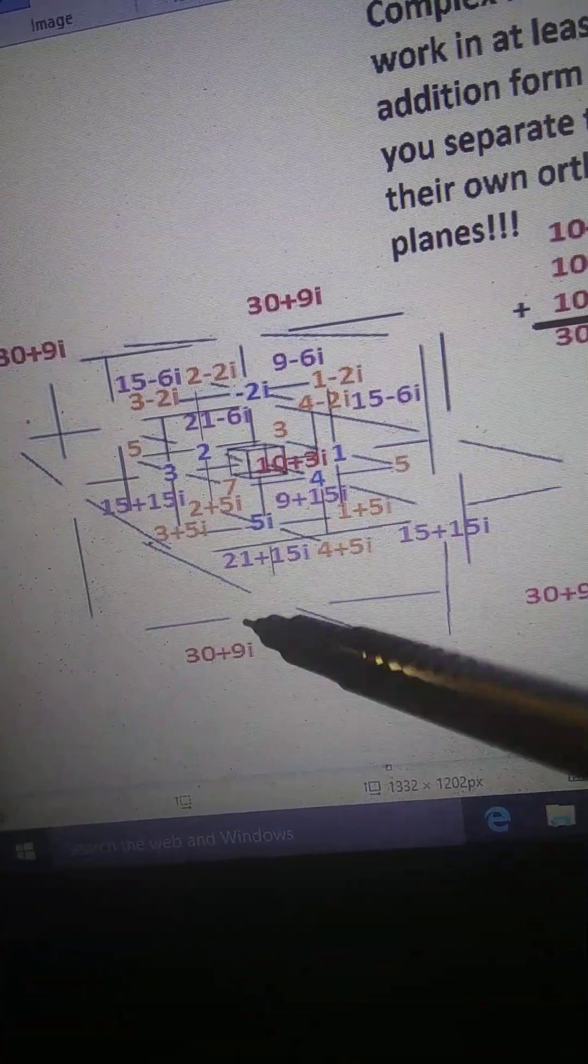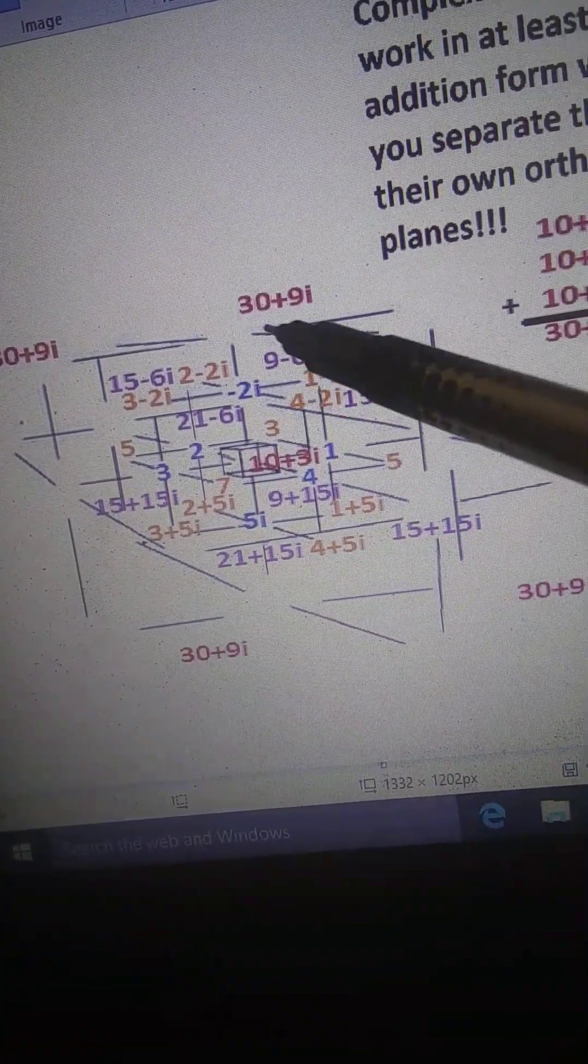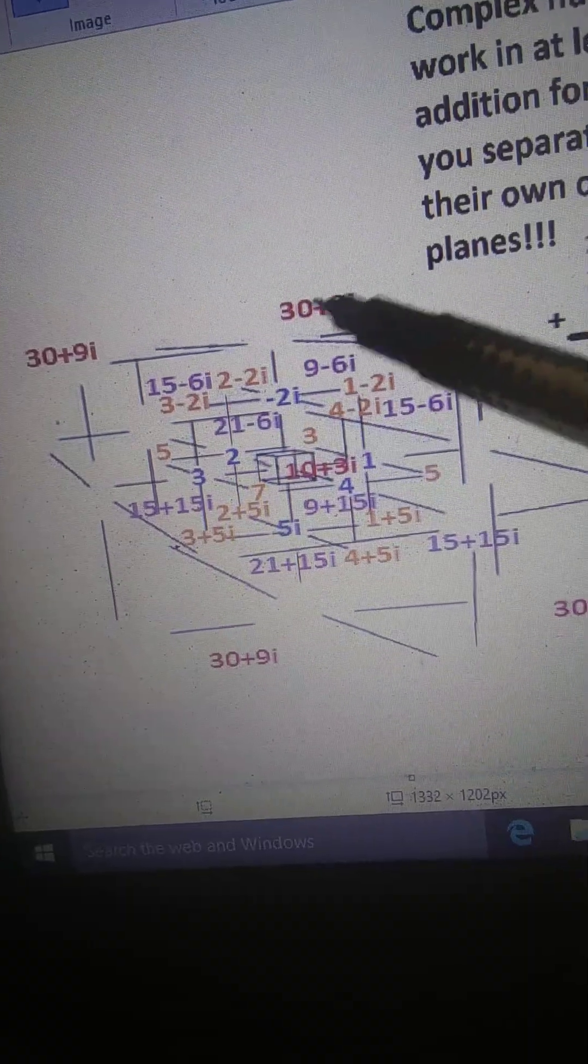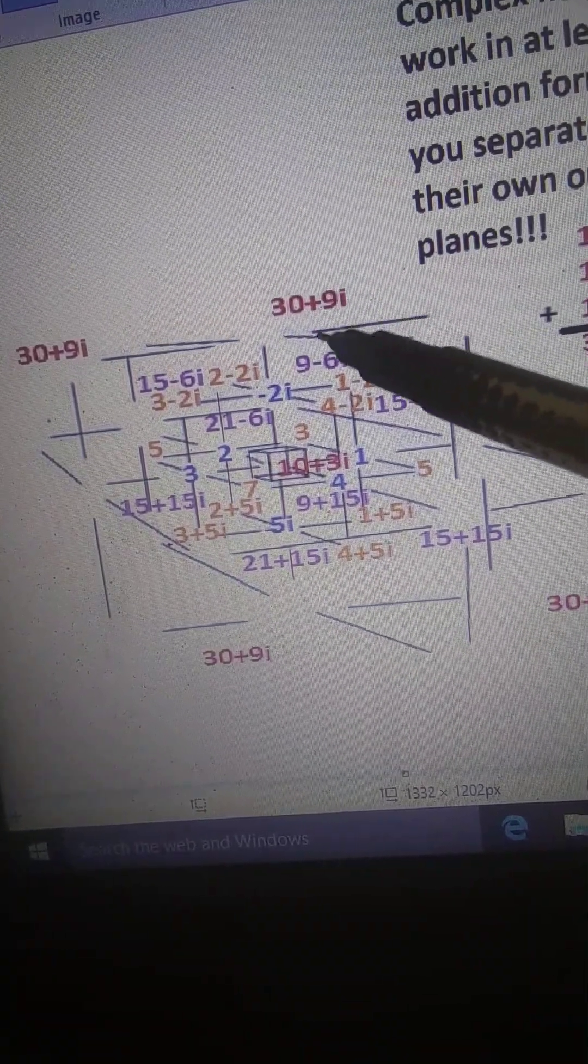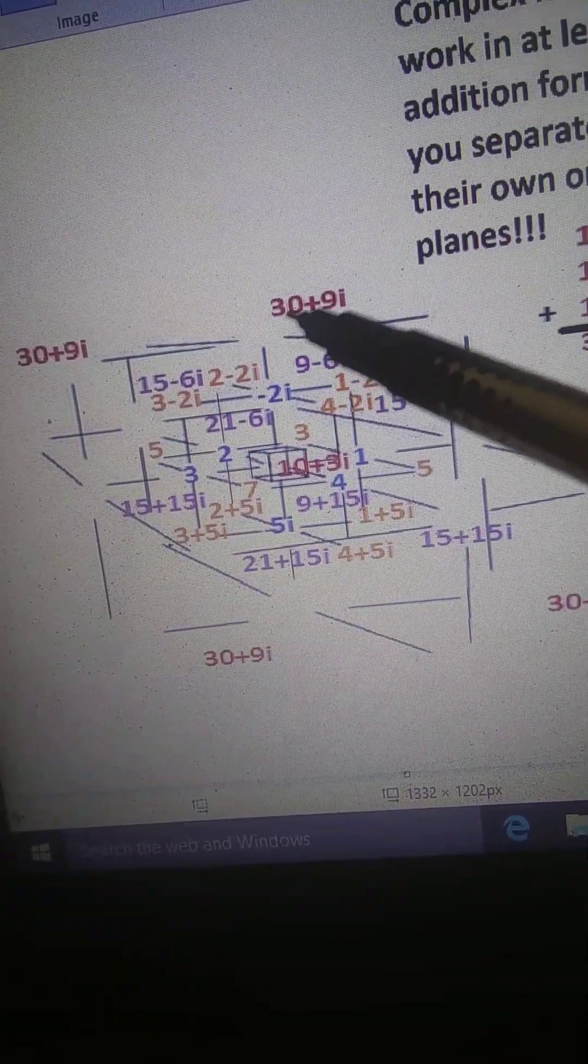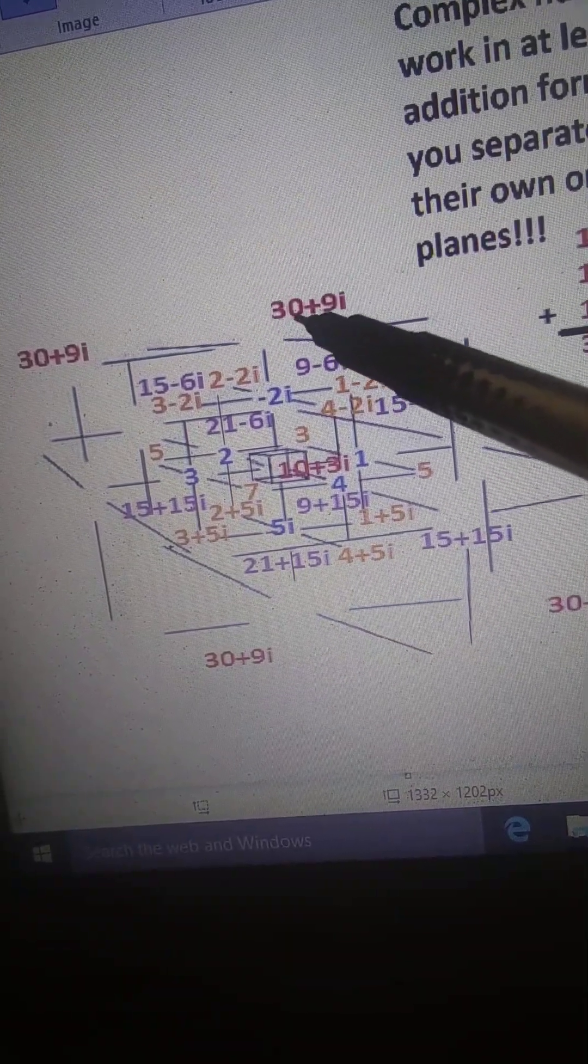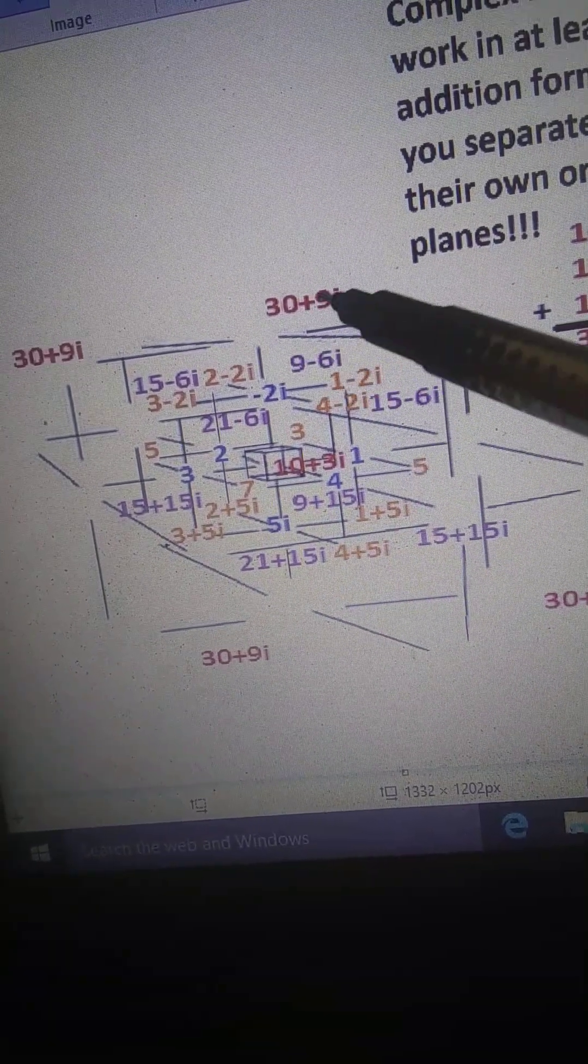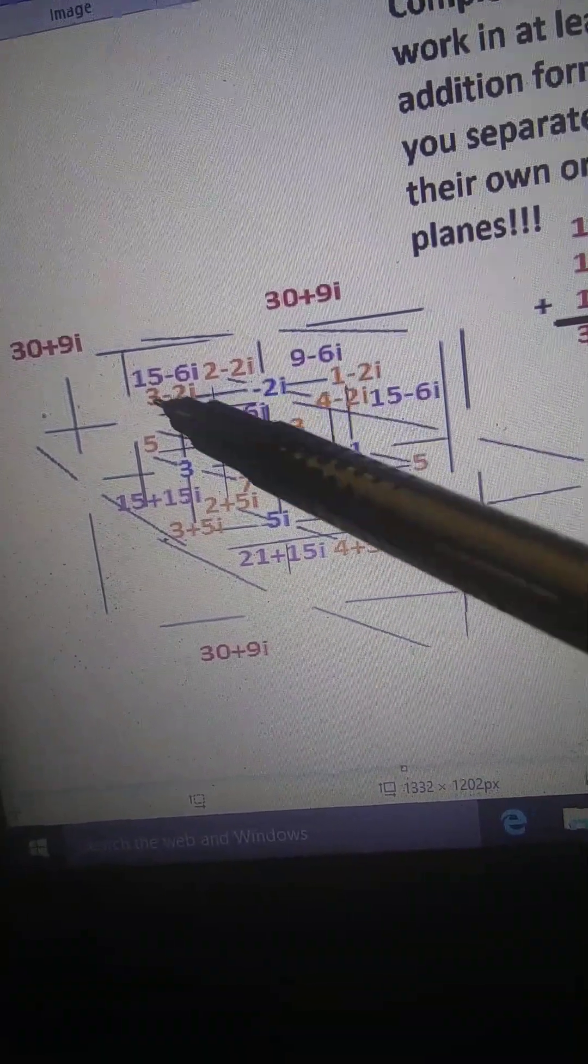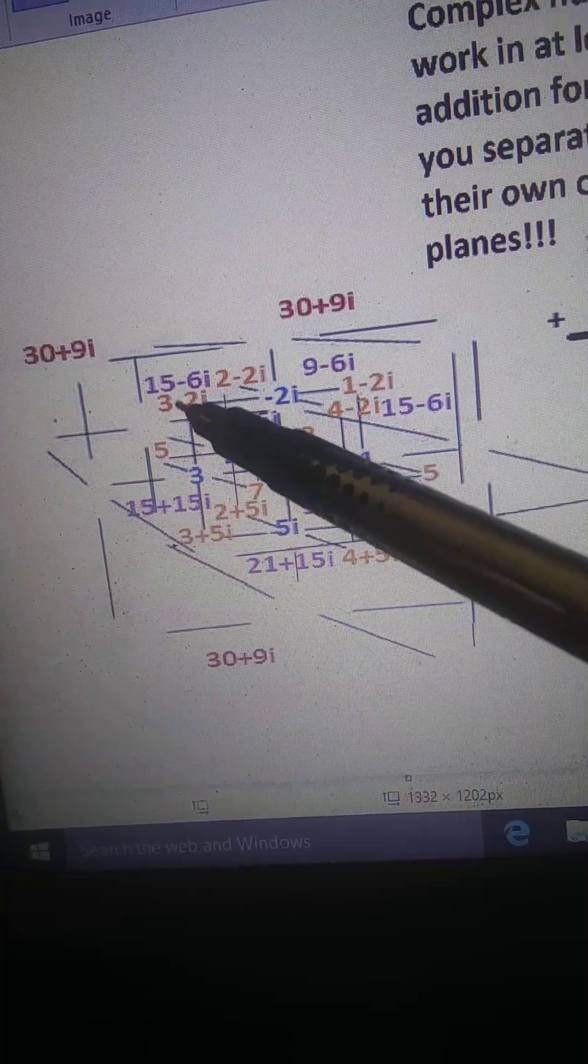And then of course twenty one and nine together are thirty. So thirty plus nine i, the real number part and the imaginary number part, are reflected on both sides as in all normal magic ghost number cubes.